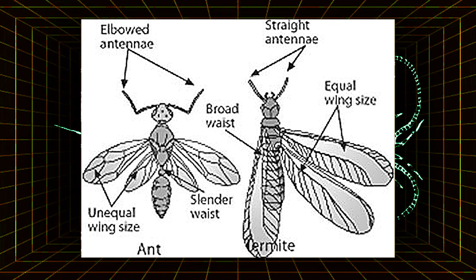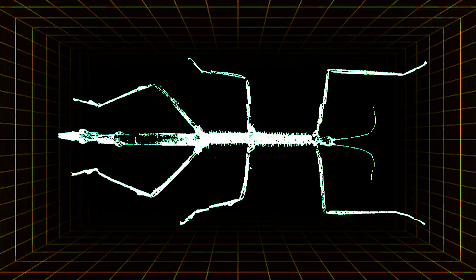Termites don't keep their wings for most of their life, instead opting to use them simply for reproductive purposes.